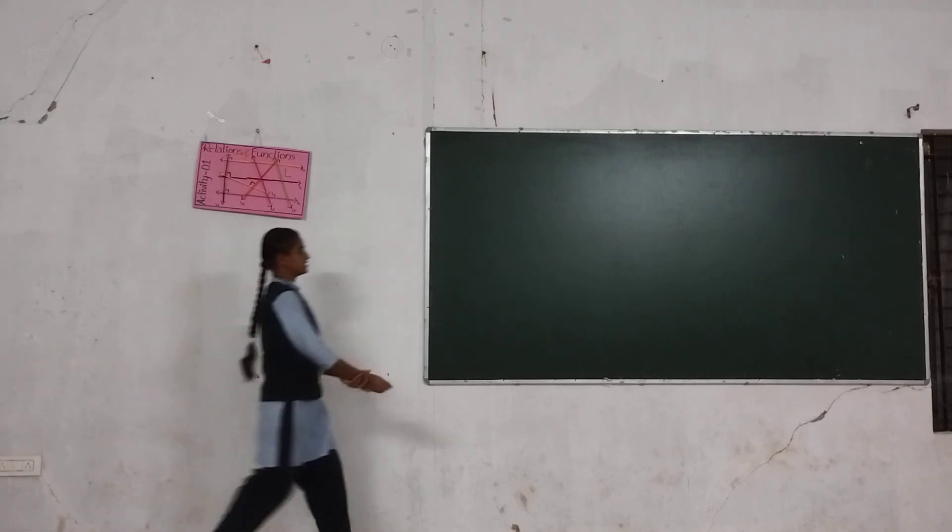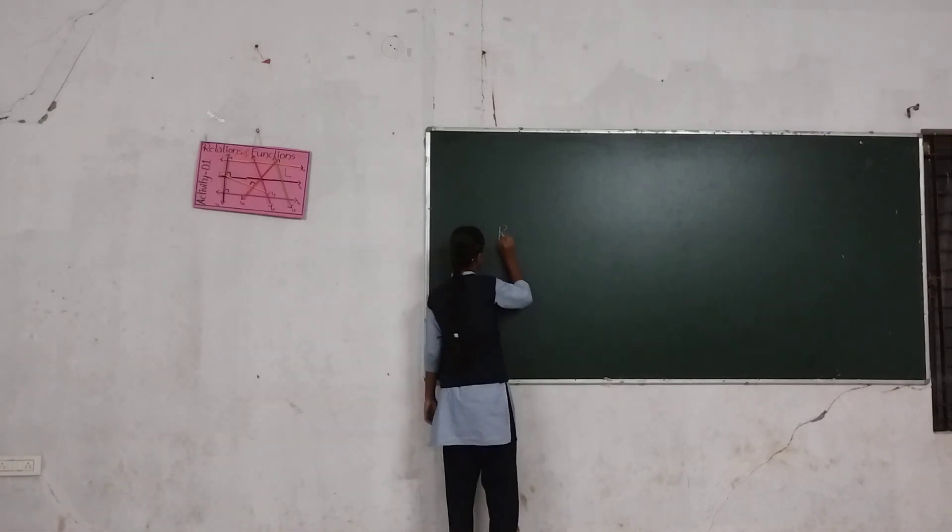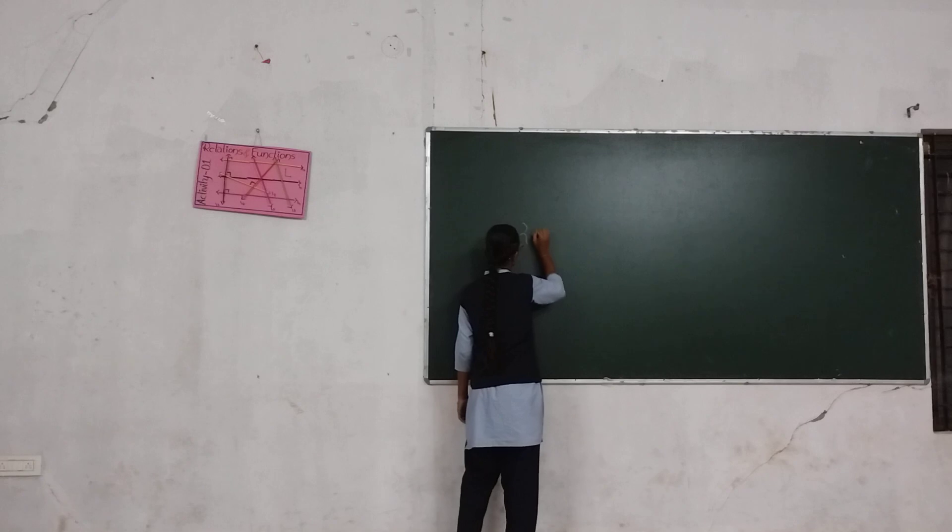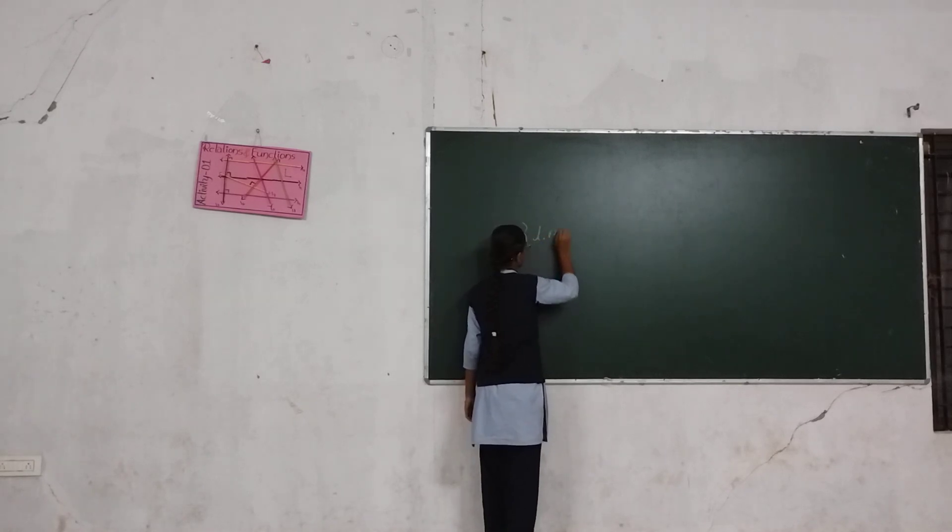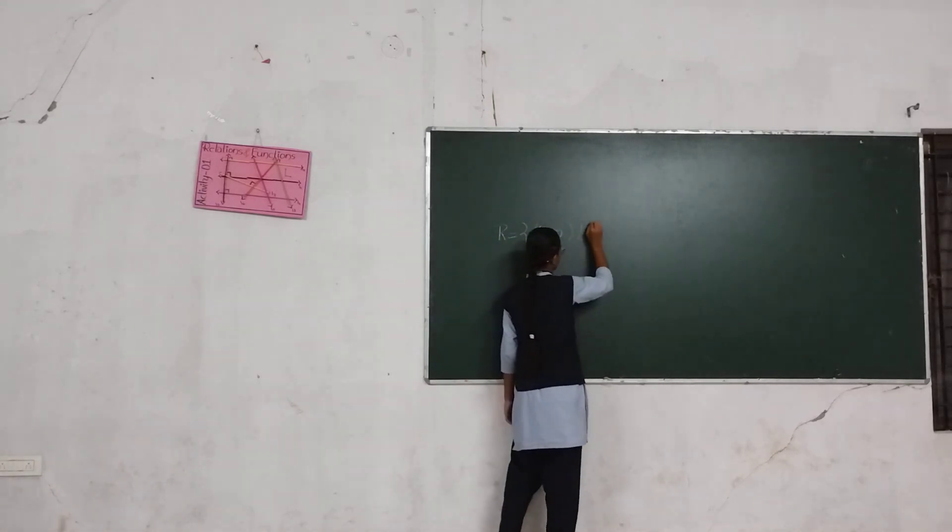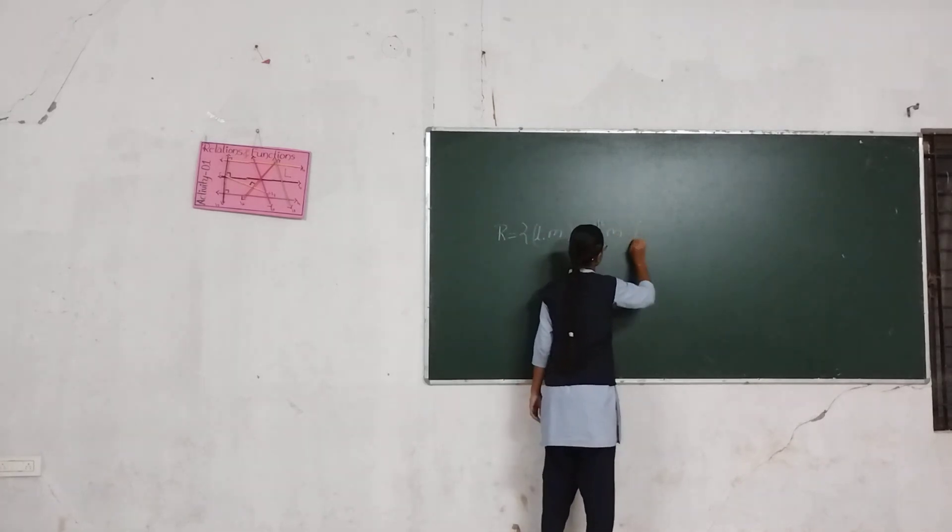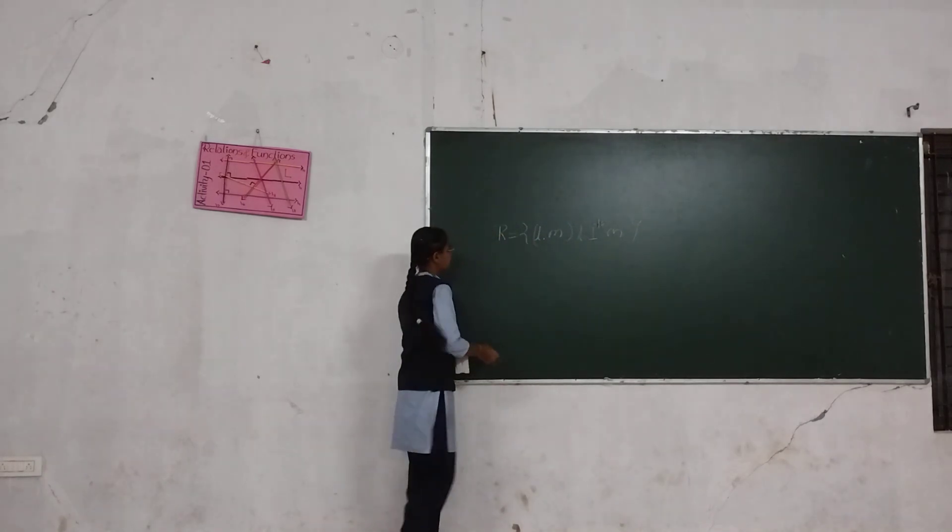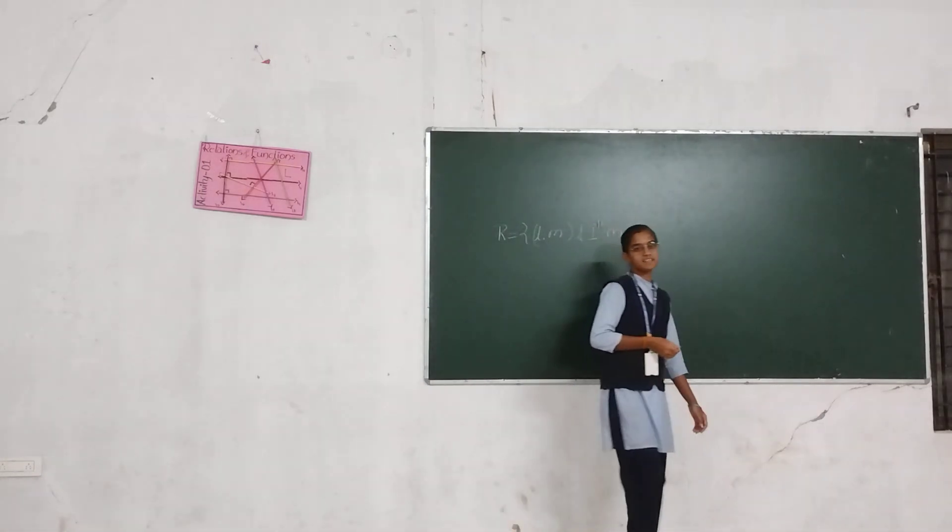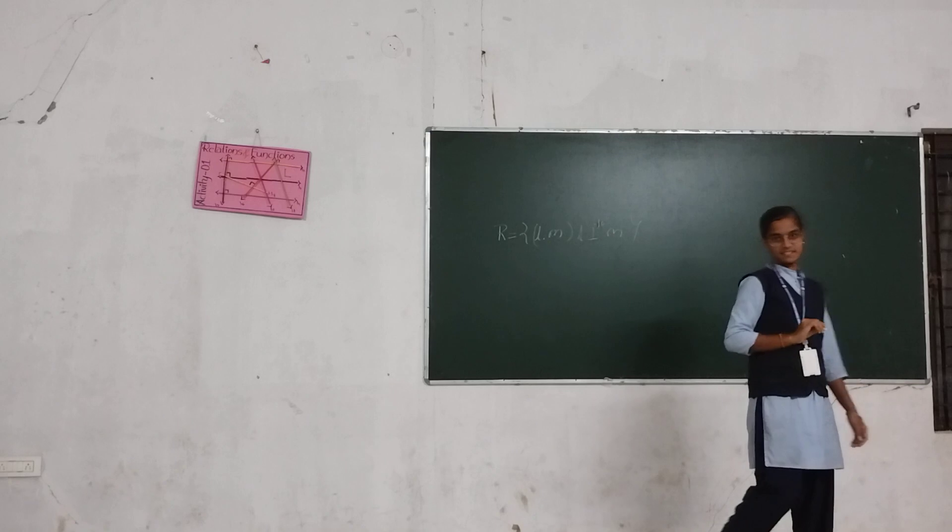First of all, objective of the relation. Relation R is equal to L, M where L is perpendicular to M. It is true. It is a symmetric relation. It is not a reflexive and transitive relation.